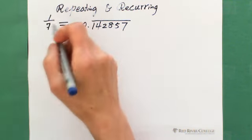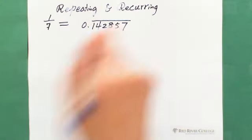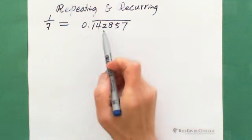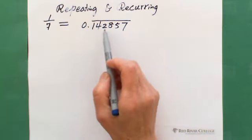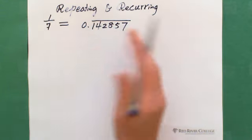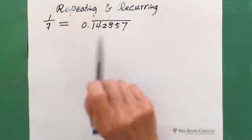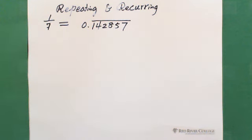1 over 7 — that means when 1 is divided by 7, we get the six-digit repeating decimal. It's very interesting: these six digits never change, they just change position. That's why we call it recurring — it changes periodically. That's why we call it both a repeating decimal and a recurring decimal.